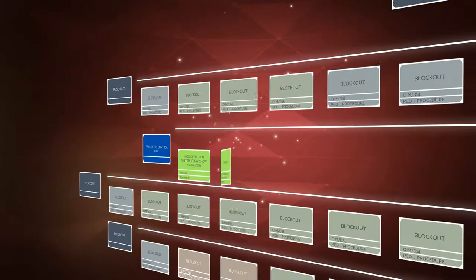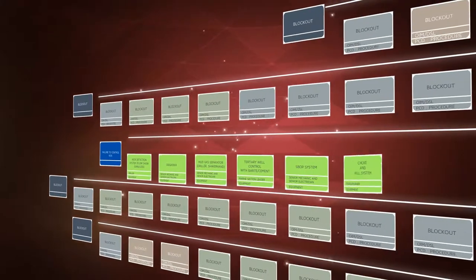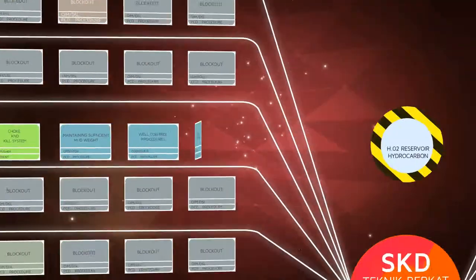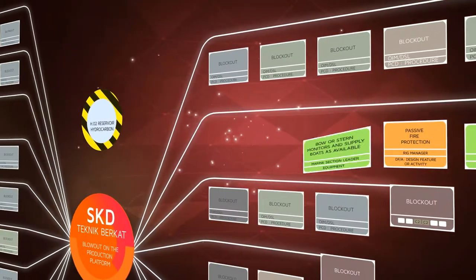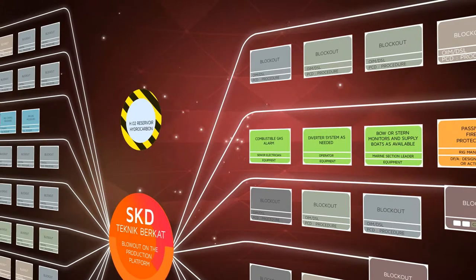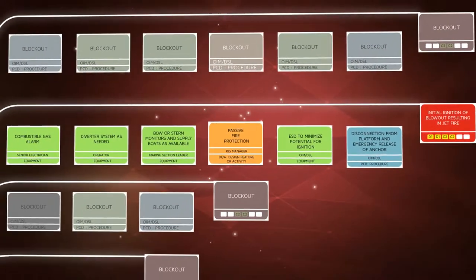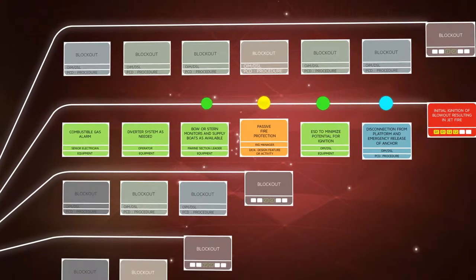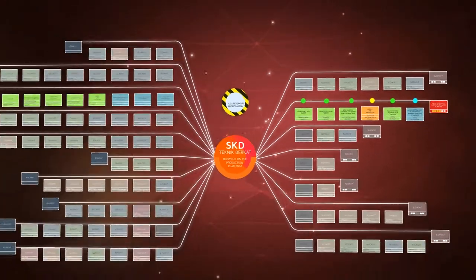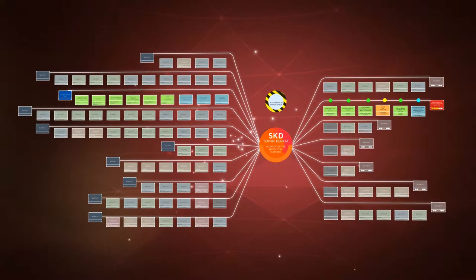Preventive branches represent the cause or threat and the list of barriers expected to be in place to prevent reaching those outcomes, whereas the recovery branches represent the undesired consequences and the list of barriers in place that contribute to the prevention of a consequence. It informs what critical barriers belong to you and that you are accountable for. If the barriers are maintained, the threat cannot be realised.